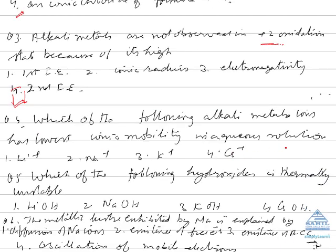Question 4: Which alkali metal ion has the lowest ionic mobility in aqueous solution? When dissolved in water, ions with small size and greater charge-to-size ratio attract more water molecules, giving high hydration energy. Larger the hydrated ion size, lower the ionic mobility. Lithium ion, due to its high charge density, has very high hydration energy, making its hydrated ion the largest in size.